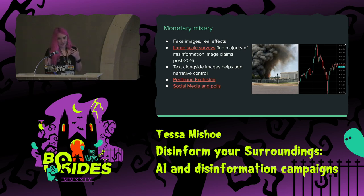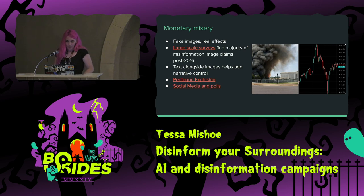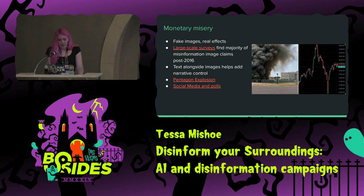Humans inherently want to believe and talk about things that feel larger than life, that surprise them, or that invoke a ton of emotions. It's why rage bait is a thing, or doom scrolling. We pick out errant behavior from normal patterns — which leads me to the next part of this talk.